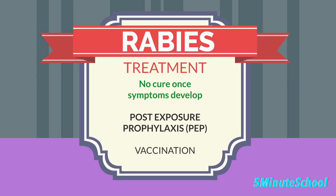There is no cure for rabies once symptoms develop, and the disease is almost always fatal. However, immediate treatment after exposure can prevent the virus from causing disease. Post-exposure prophylaxis (PEP) consists of a series of injections of rabies vaccine and immunoglobulin, which should be administered as soon as possible after exposure.